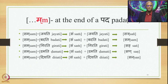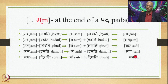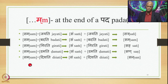Sam plus Damati: Ma is substituted by Anuswara by 8.3.23, giving Sam Damati. Then 8.4.59 (Vapadantasya) substitutes this Anuswara by the nasal Parasavarana of D, which is Na, giving Sam Na Damati optionally, and Sam Damati (with Anuswara) as the optional alternative.